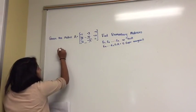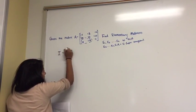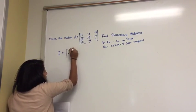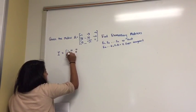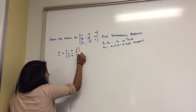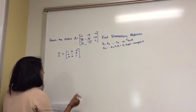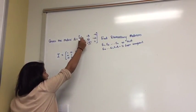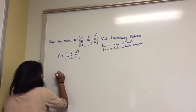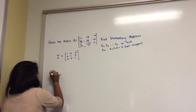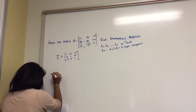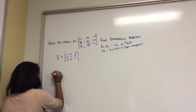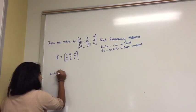And so your first step, you want to write out the identity matrix, which is I equals 1, 0, 0, 0, 1, 0, 0, 0, 1. And what you want to do is you want to get this three to be a zero. So the first step would be to say R2 equals R2 plus 3R1.